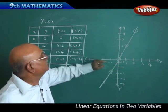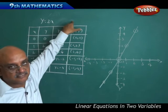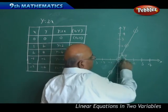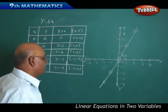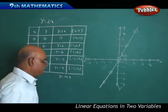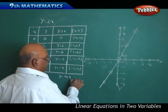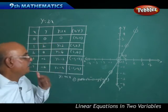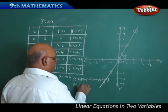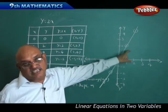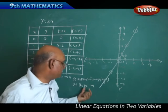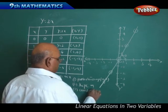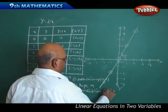Why are we getting a straight line? The reason is we don't have any constant term here. If you generalize it, this line makes an angle with the x axis. Therefore, the generalized form is y equal to mx, which is the general form of a straight line. The properties are: it passes through the origin, that is 0 comma 0; slope is m, which is the angle of inclination with the x axis; and the constant term is 0.